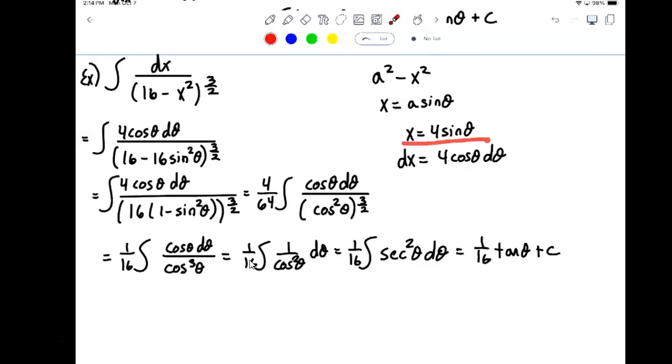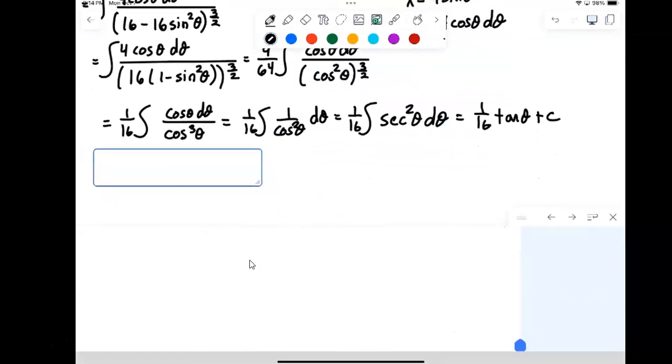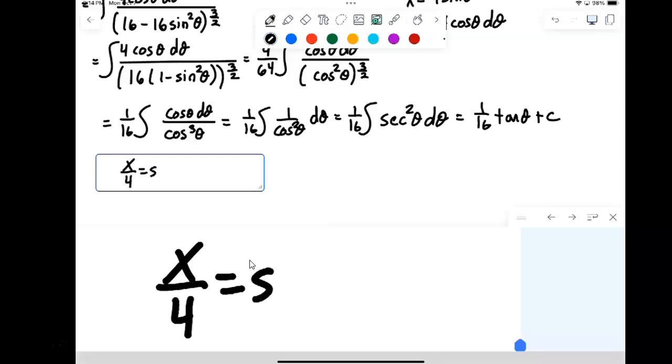We know that x is 4 sine theta. Now, I could say what theta is. I could solve for theta. It's x over 4 and then apply the inverse sine. Theta is the inverse sine of x over 4. Okay, but it's better if I just look at it this way and say x over 4 is equal to sine theta. So, or sorry, x is equal to 4 sine theta. So we know that x over 4 is equal to sine theta.